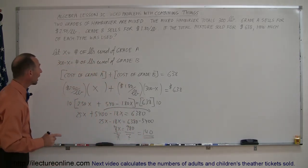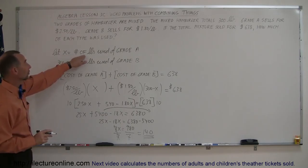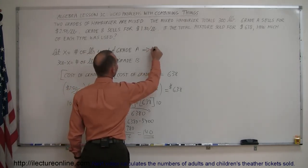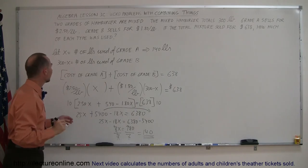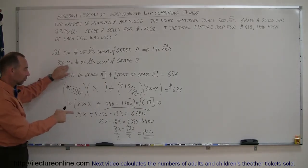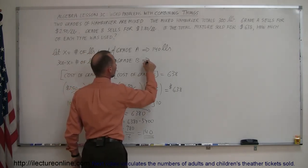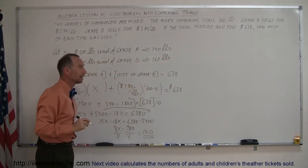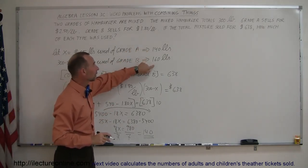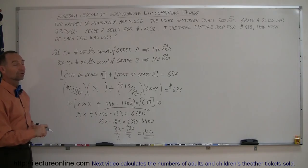And now we can go back and see how we define everything. Since X represented the number of pounds used of grade A, that means we used 140 pounds of grade A. And then here, 300 minus X, since X is 140, 300 minus 140 is 160. That means 160 pounds were used of grade B. And if you add the two together, you get 300, which is how much we had to begin with. So, that looks good. That's how you do a problem like that.